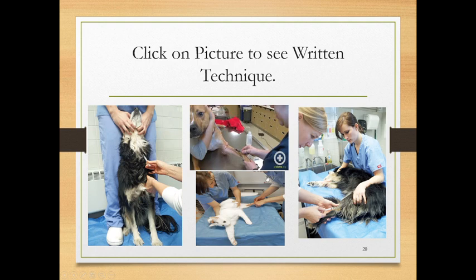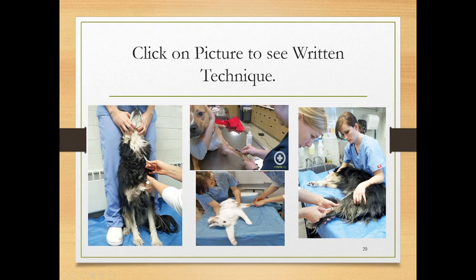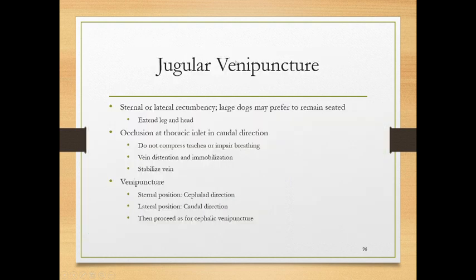Clicking on the jugular venipuncture image shows the person occluding the vessel; they should be going as distally as possible, closer to the hand. You can also see blood collection from the cephalic, medial saphenous in a cat, and lateral saphenous in a dog. Clicking on the image will provide descriptions of jugular venipuncture — technique, best practices, and what to watch for. I definitely recommend going through all of these.